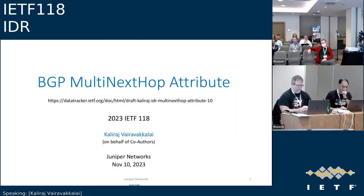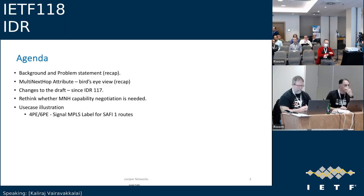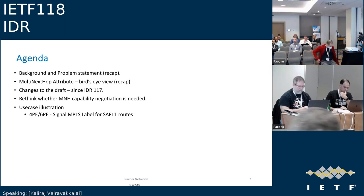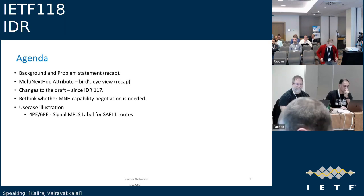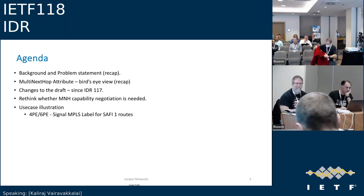Hi everyone, this is Kali Raj. I'm going to talk about the BGP multi-next-hop attribute and present it again, covering the changes that have happened since IETF 117. We'll do a recap of the background, the problem statement, and a bird's-eye view of the multi-next-hop attribute. We're also rethinking whether the capability negotiation that was added is required, and we've added a few use cases including a deep dive on the 4PE or 6PE use case.